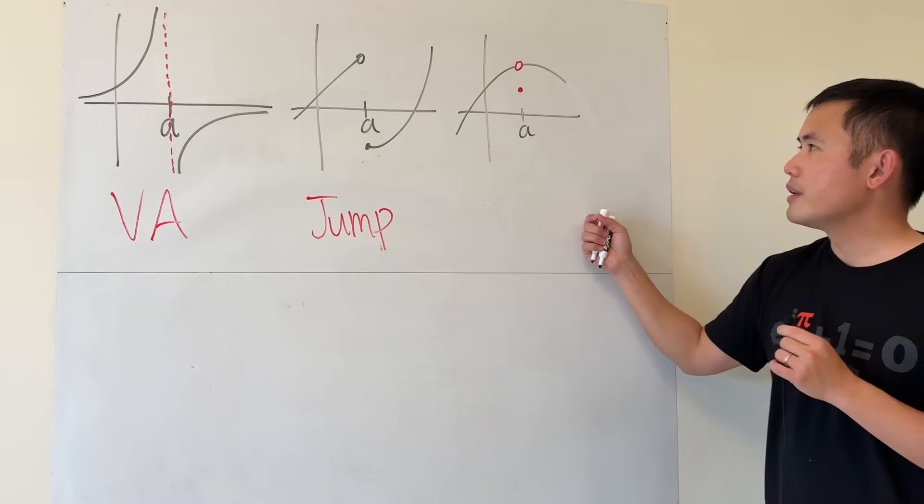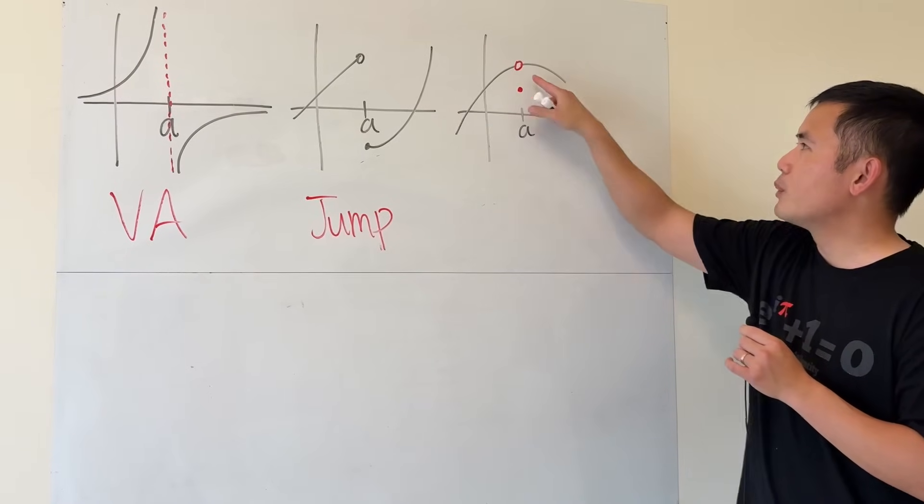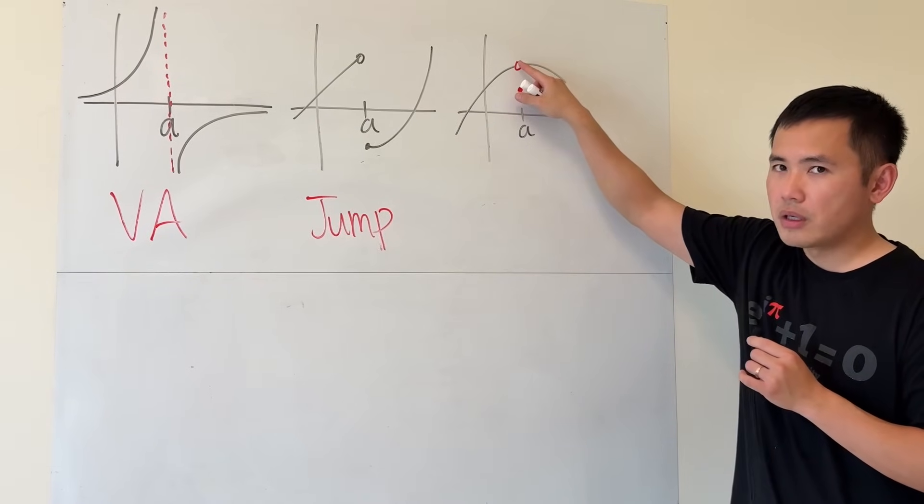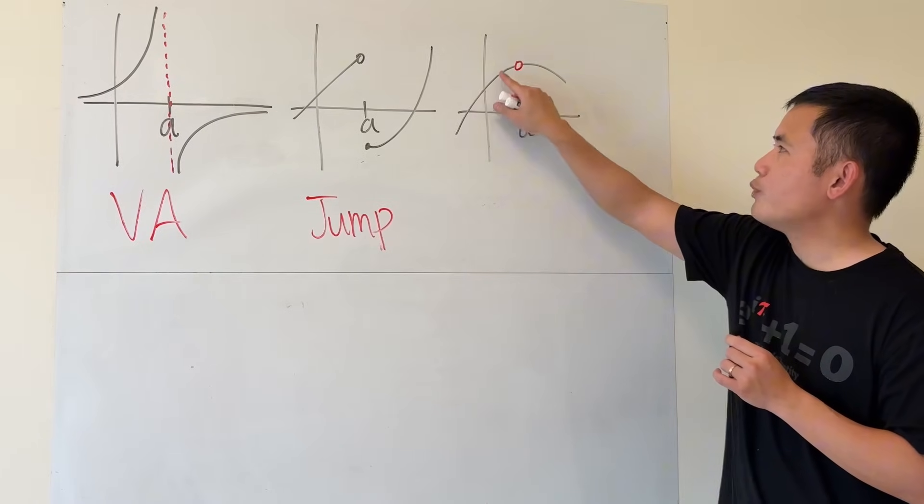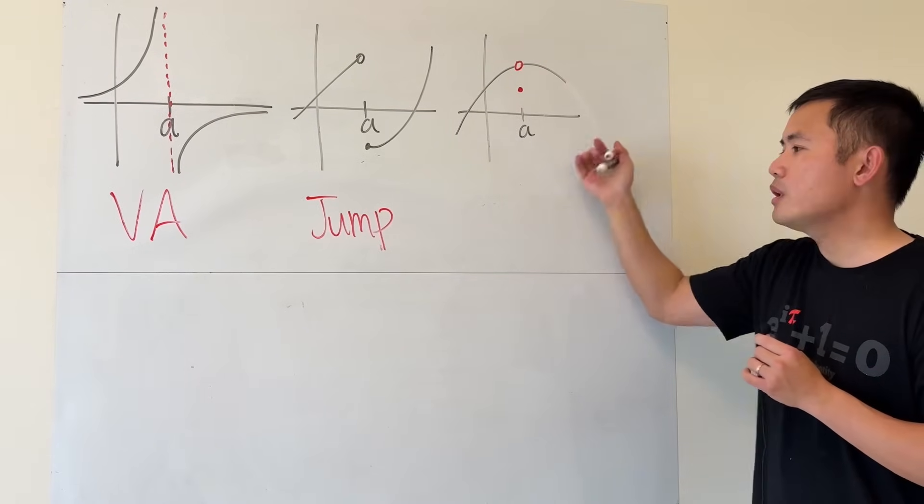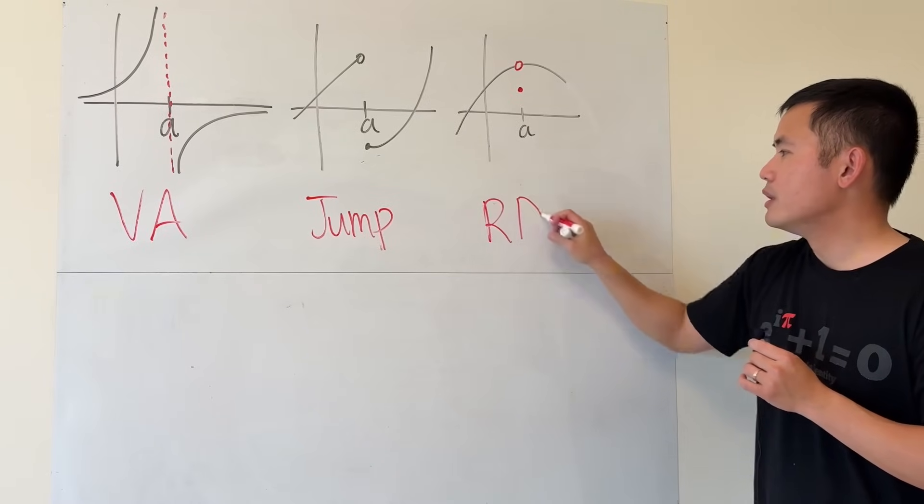Lastly, for this one right here, notice that we have a graph, but with an open circle here. But imagine if you can fill in the open circle, then the graph would be continuous. We call this a removable discontinuity.